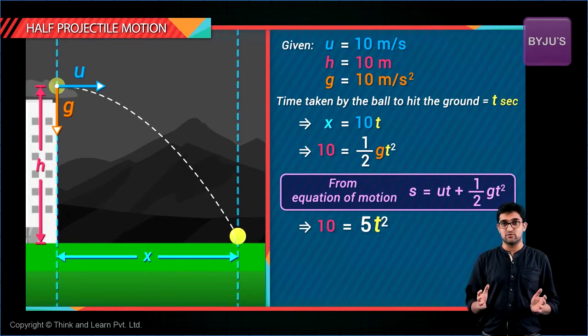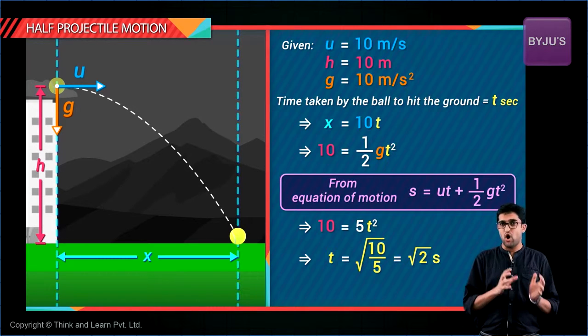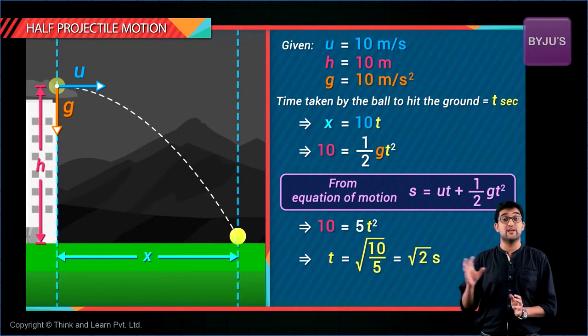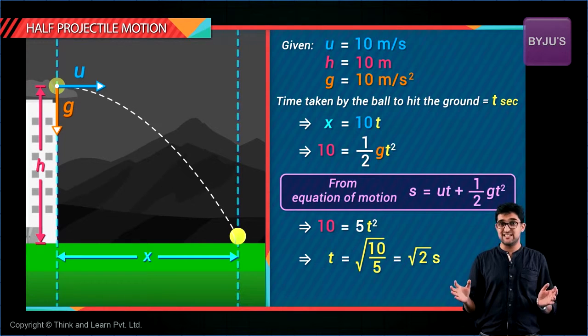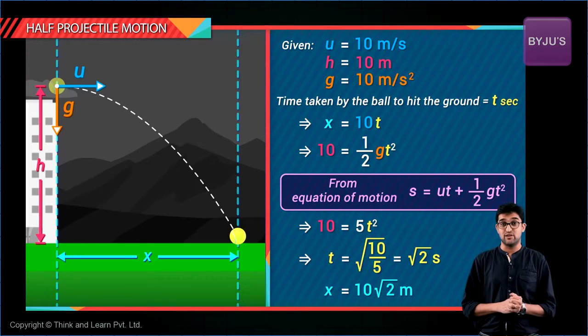per second, so that's 5 t square. So t will be 10 by 5 root of that which is root 2. So the ball takes root 2 seconds to hit the ground, so what will be the distance at the point where it hits the ground will be nothing but root 2 into 10, that's 10 root 2